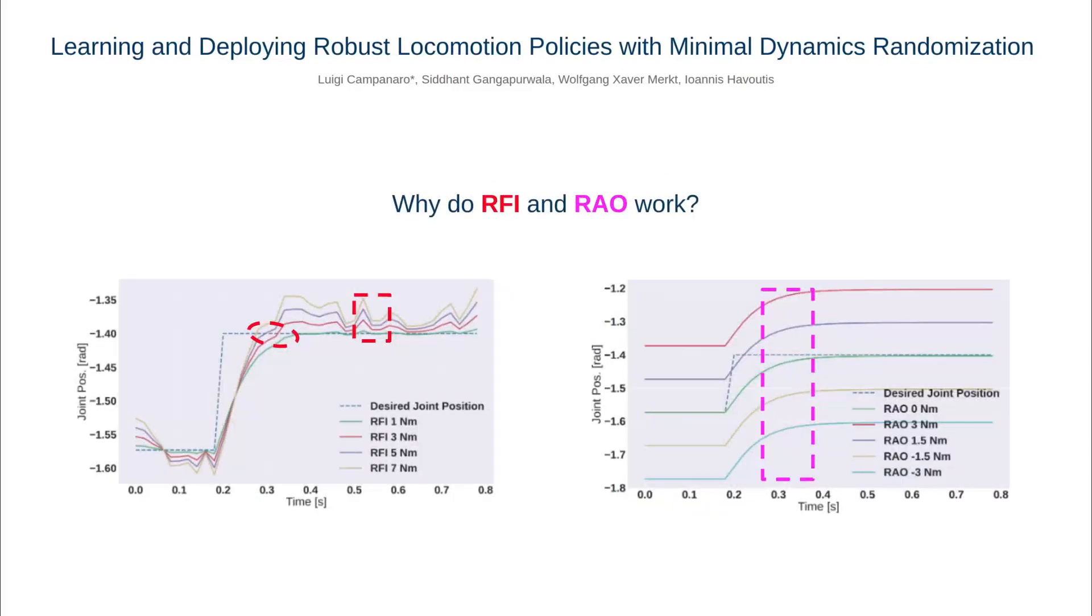We explain how RFI, random actuation offset, and ERFI work with our simple experiments. We commanded a step position change of 10 degrees to the impedance controller previously showed, and we observed that RFI adds stochasticity to the rise and settling time.